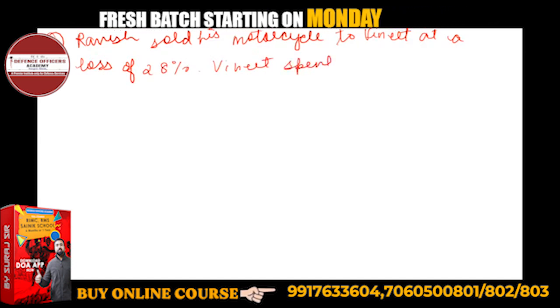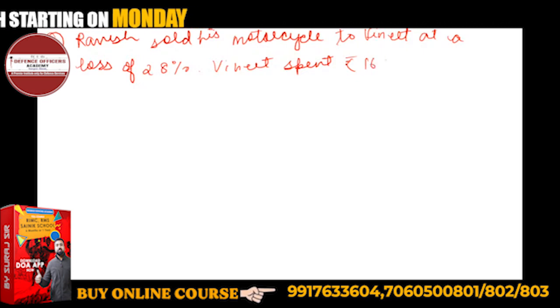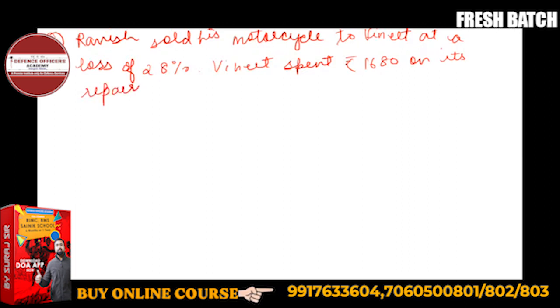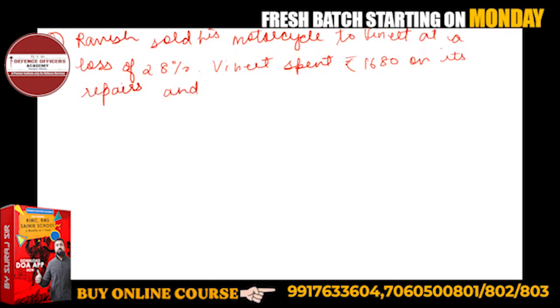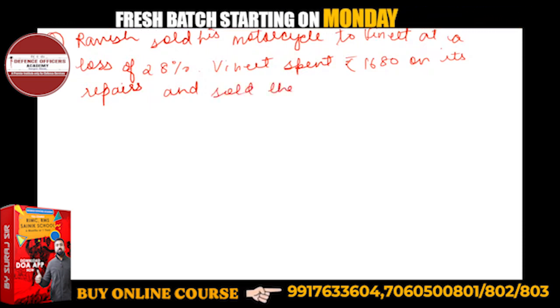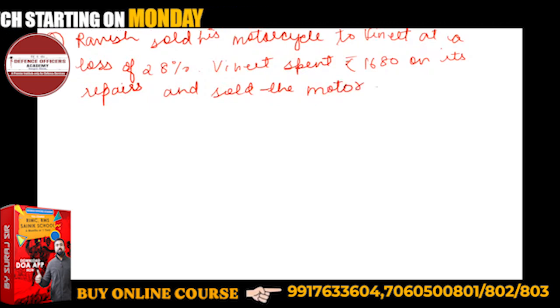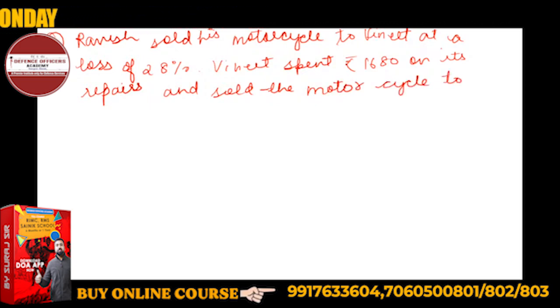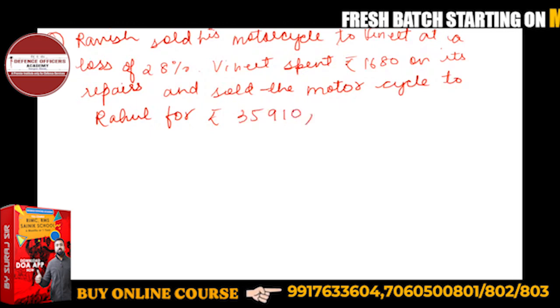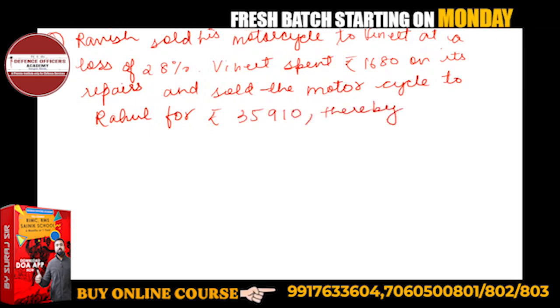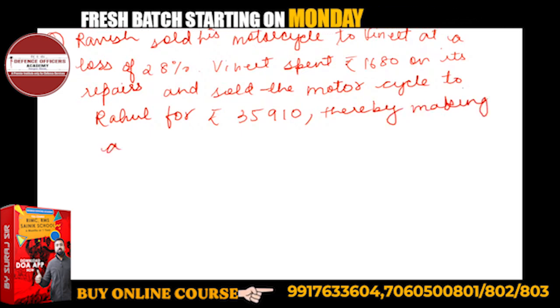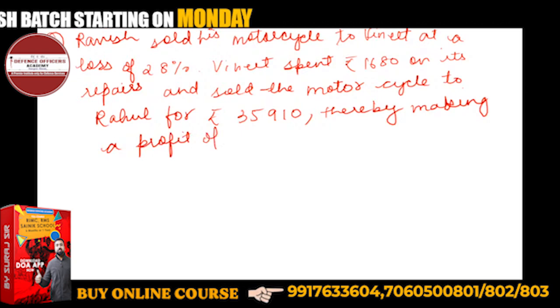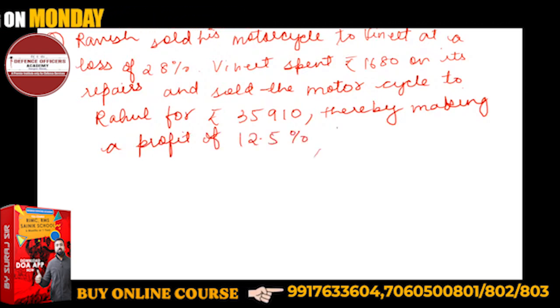And sold the motorcycle to Rahul for rupees 35,910, thereby making a profit of 12.5%. You have to find the cost price of the motorcycle for Ravish.